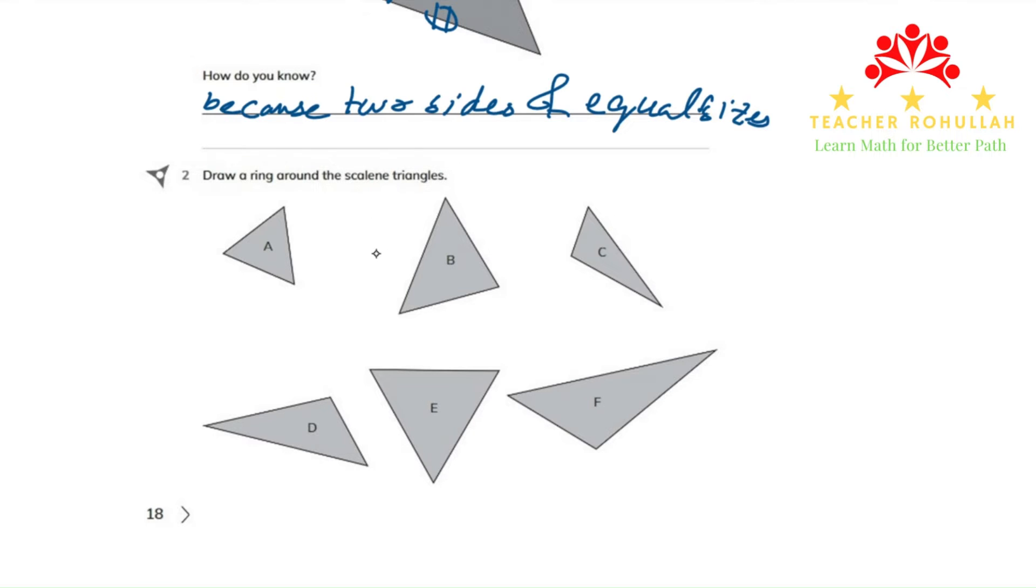We have some triangles over here which are labeled from A to E. Triangle A is an equilateral triangle because all the sides are equal. Triangle B is an isosceles triangle because this side and this side are of equal sizes.